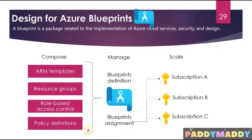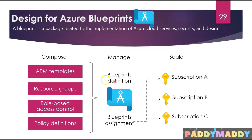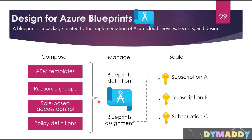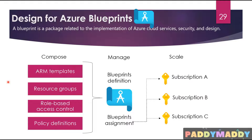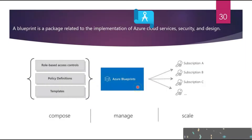Coming back to policy definitions: policy definitions allow assignment of a policy or initiative to the subscription the blueprint is assigned to. The policy or initiative must be within the same scope as the blueprint definition location. If the policy or initiative has parameters, these parameters are assigned at creation of the blueprint or during the blueprint assignment. The scope can be at subscription or resource group level.